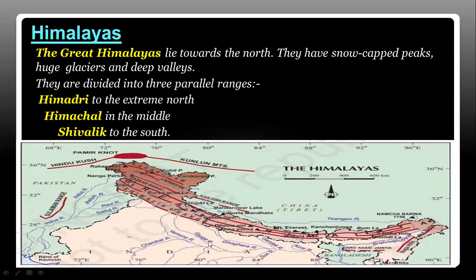As you can see in the picture, many rivers rise from the melting snow in the Himalayas. These rivers flow through the northern plains to join the water bodies surrounding India.